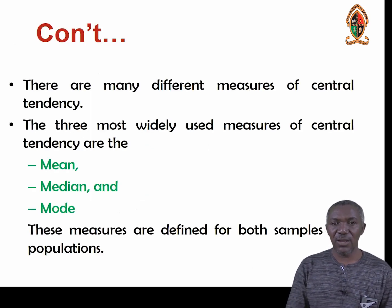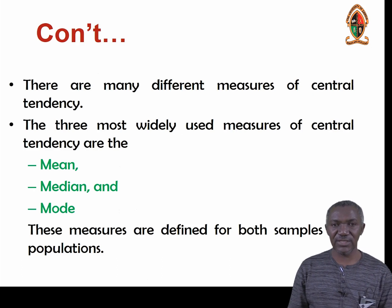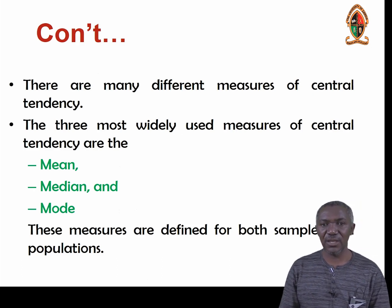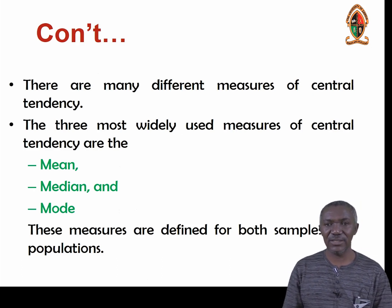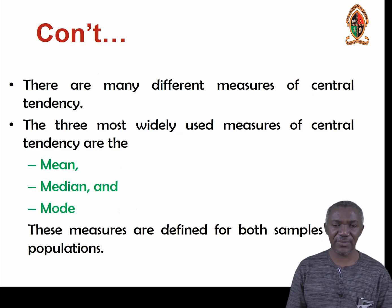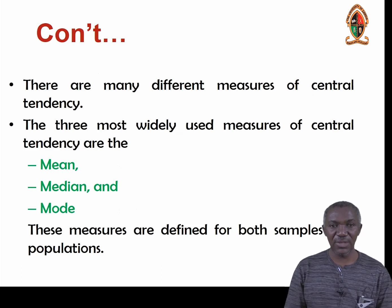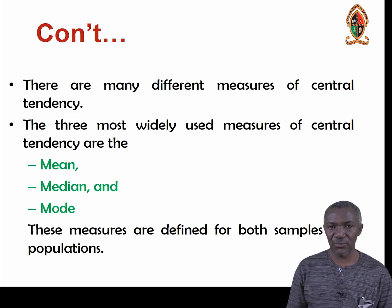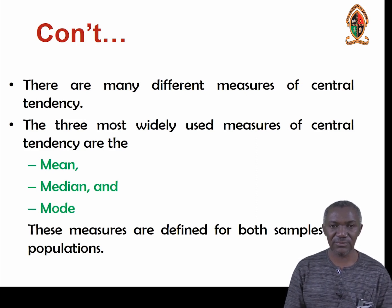When it comes to measuring central tendency, there are three most widely used measures: the mean, the median, and the mode. These measures are defined for both samples and populations.